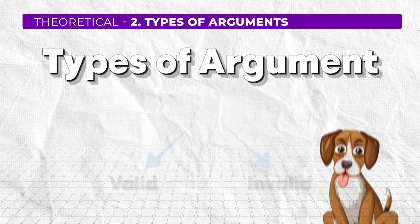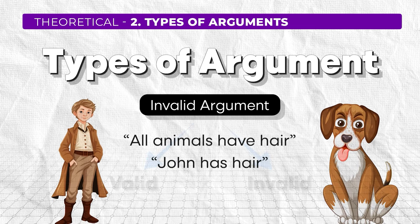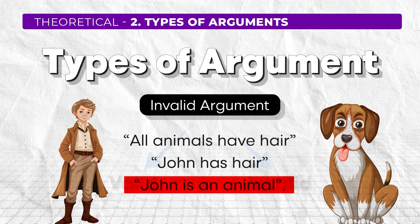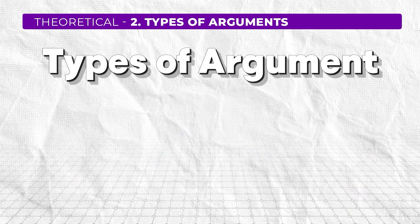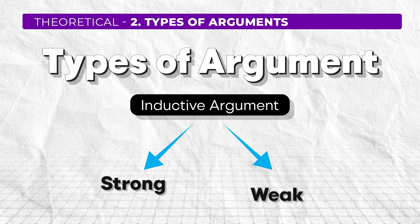For example, all animals have hair and John has hair — can I conclude that John is an animal? That's not valid. All animals have hair is acceptable, but concluding John is an animal is an invalid argument. Similarly, inductive arguments are further divided into two parts: strong argument and weak argument.